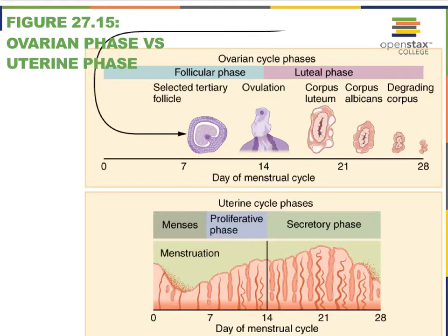This wraps up our discussion of the ovarian and uterine cycle. We related the ovarian cycle to oogenesis, and we also related the ovarian cycle to the uterine cycle. Therefore, you should also be able to relate the uterine cycle to oogenesis.